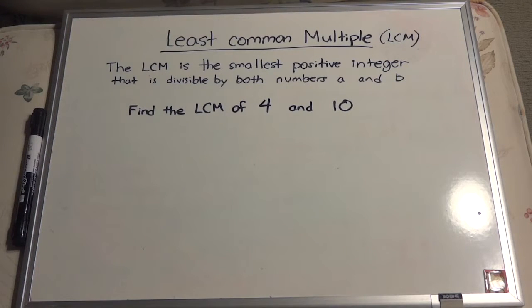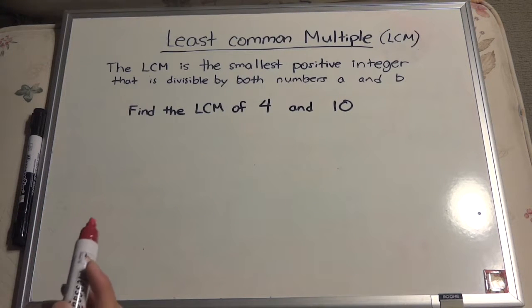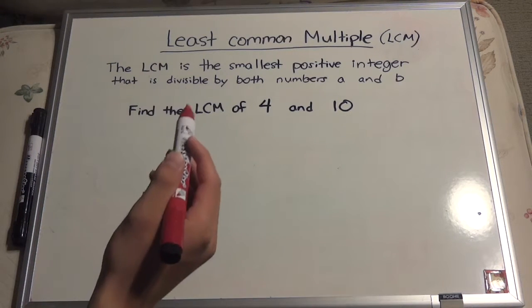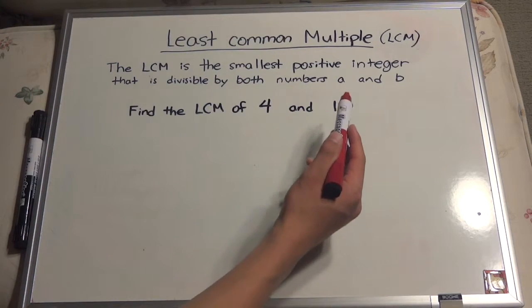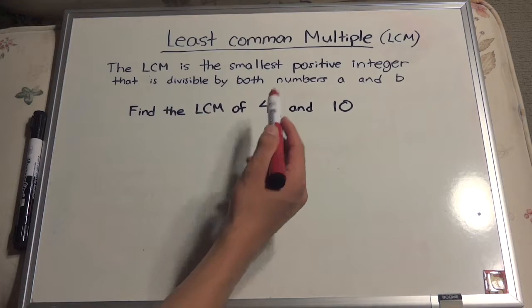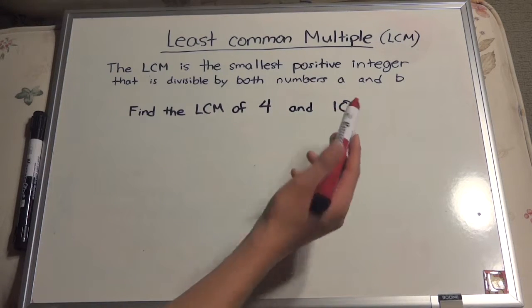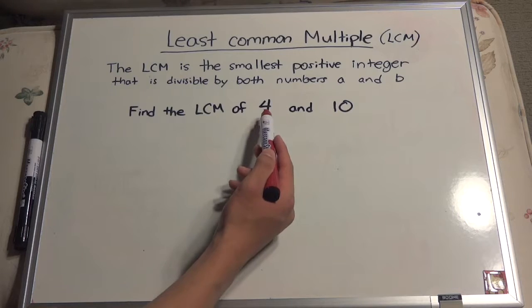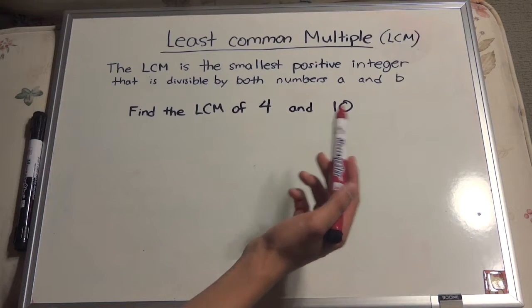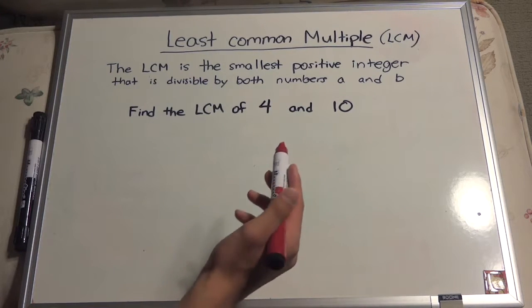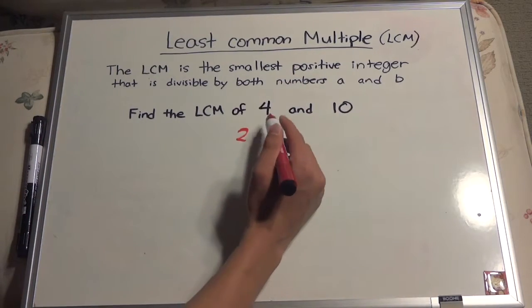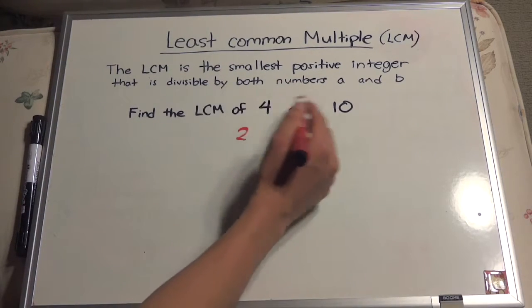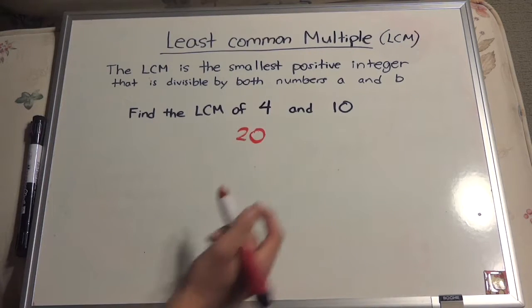Let's say you were asked to find the least common multiple of the numbers 4 and 10. The LCM of 4 and 10 would be 20, because 20 is the smallest number that both 4 and 10 can go into. You can do 4 times 5 to get 20, and 10 times 2 to get 20. You wouldn't do 4 times 10, which is 40 — that's not the answer, because we want the smallest number divisible by 4 and 10. So the answer would be 20.